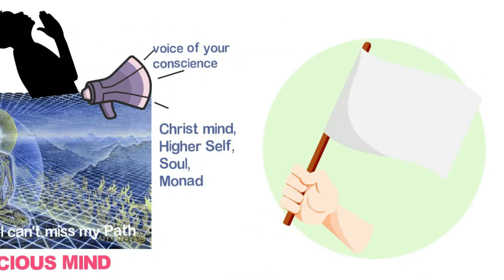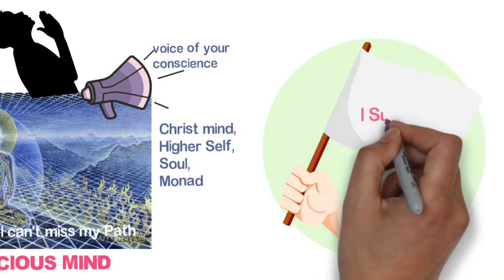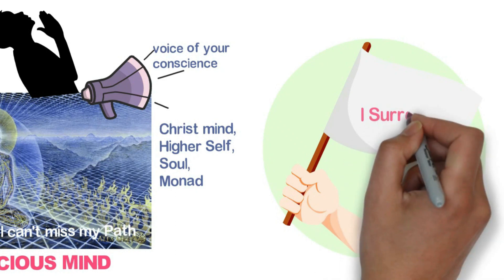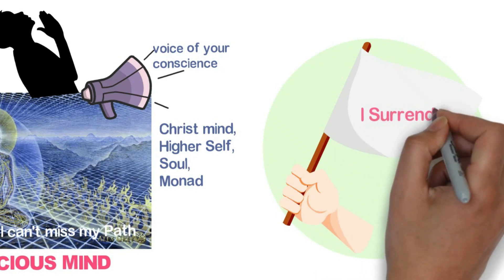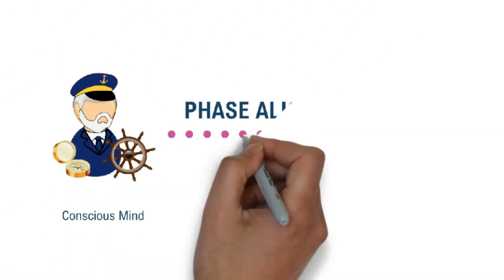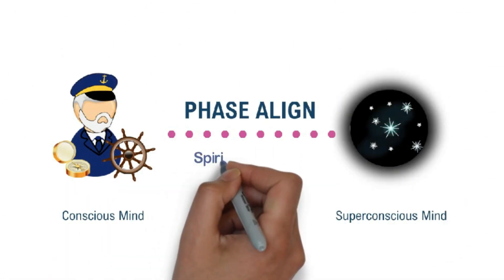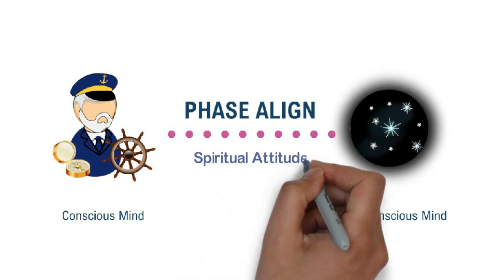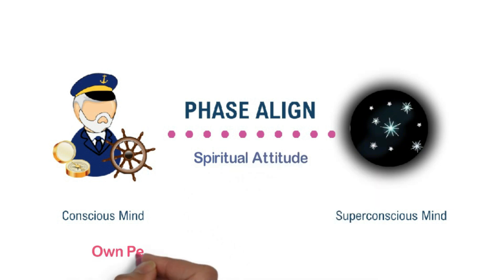Now, a signpost that you are aligning with your higher self is when your mind starts surrendering. Because by its very nature, the personality doesn't like to surrender, it wants full control. But when the captain of the ship and the North Star, they come into phase alignment, we develop spiritual attitude. Now, we are starting to own our power and also surrender to God simultaneously.